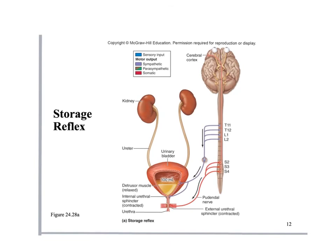The thoracic nerves go to the bladder and allow accumulation of urine. The pudendal nerve goes to the external urethral sphincter to keep it contracted, voluntarily holding urine. So micturition is both a voluntary and an involuntary process. Sympathetic nervous system input drives the storage reflex.